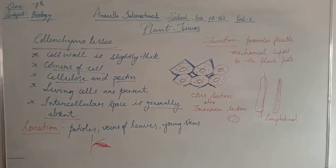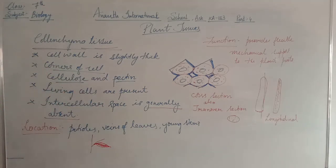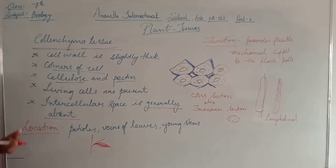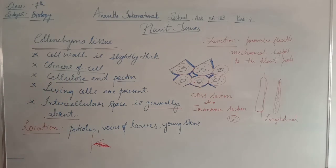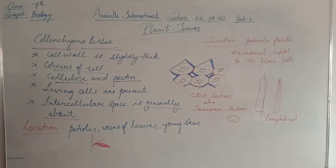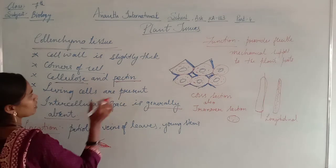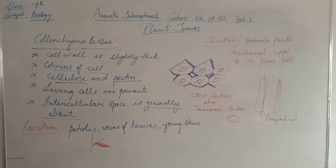To summarize collenchyma tissue: it is the second type of supporting tissue. The cell wall is slightly thick compared to parenchyma. The wall is thick only at the corners, made up of cellulose and pectin. Living cells are present. Intercellular space is generally absent in collenchyma tissue.